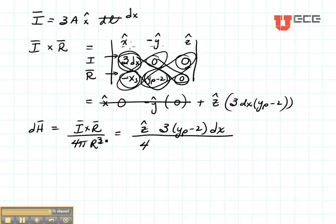And this magnitude is going to be XS squared plus YP minus 2 squared, square rooted and then I'm going to cube it. There's my dH term.